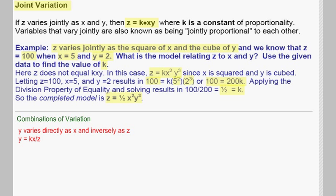We can also get combinations of variation. For example, we could have y varying directly as x and inversely as z. The model we would get here would be y equals kx divided by z, not kx plus z, but kx divided by z. We incorporate direct variation and inverse variation in one model.